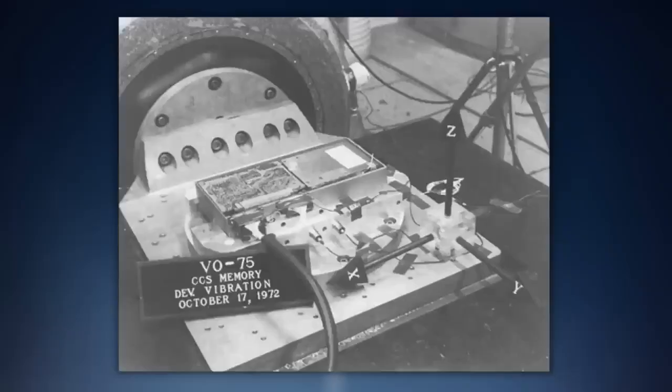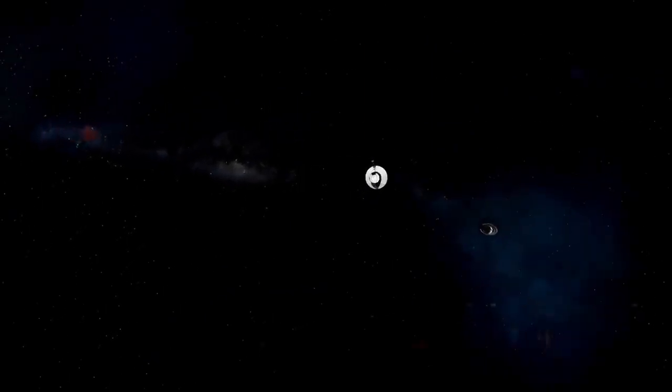There are speculations that the problem is with Voyager 1's Attitude Articulation and Control System, or AACS, which keeps the spacecraft and its antenna oriented correctly.